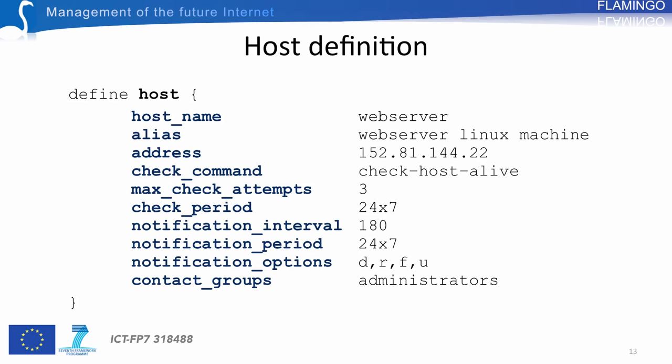The value here is check-host-alive, a reference to a command object that checks the server status by simply pinging it. The max_check_attempts indicates the number of times the check must be performed before sending notifications — before the down status is confirmed. The check_period specifies the period during which checks are performed; the value 24x7 refers to an object indicating checks 24 hours a day, 7 days a week.